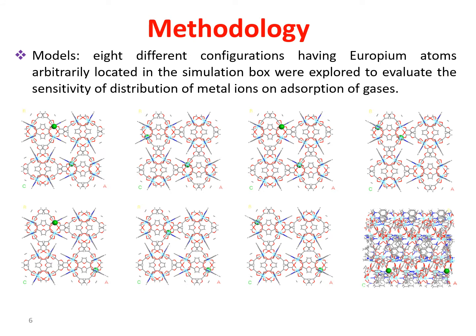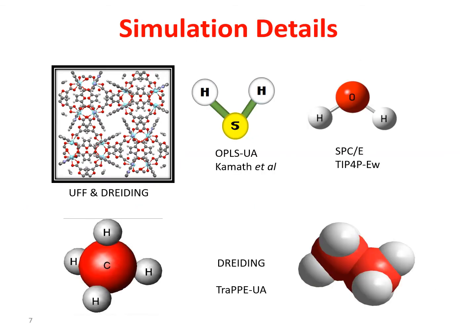Eight different configurations having europium atoms arbitrarily located in the simulation box were explored to evaluate the sensitivity of distribution of metal ions on adsorption of gases. Several sets of Lennard-Jones parameters have been derived for methane, of which Dreiding, TRAP-UA and Goodbody et al. are most commonly applied in studies of adsorption. Methane in these force fields is represented by a united atom model with one site. The difference between these force fields is only in epsilon: for Dreiding it is 149 K, and for TRAP-UA or Goodbody et al. it is 148 K. In this work, TRAP-UA force field was used to represent methane, and the results were compared with our previous work where the Dreiding model was used.